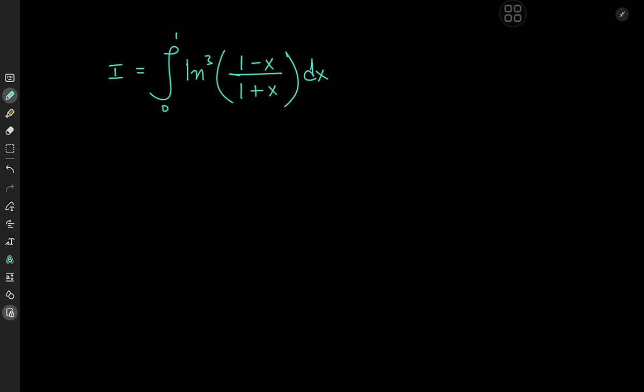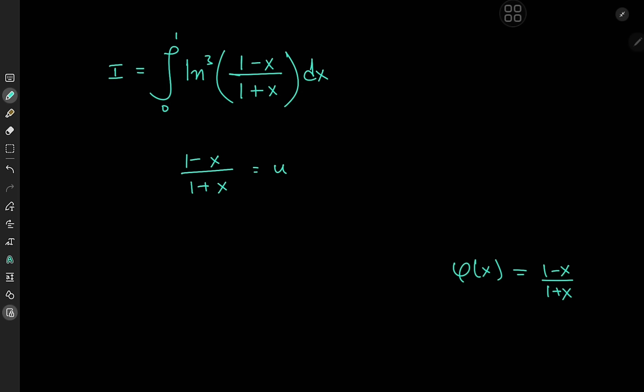We're going to invoke a rather aggressive substitution first. We're going to let (1 minus x) divided by (1 plus x) equal u — the whole thing. This is a very useful substitution because it maps the interval 0 to 1 onto the interval 0 to 1. Also, this function φ(x) defined by (1 minus x)/(1 plus x) is actually a self-inverse function.